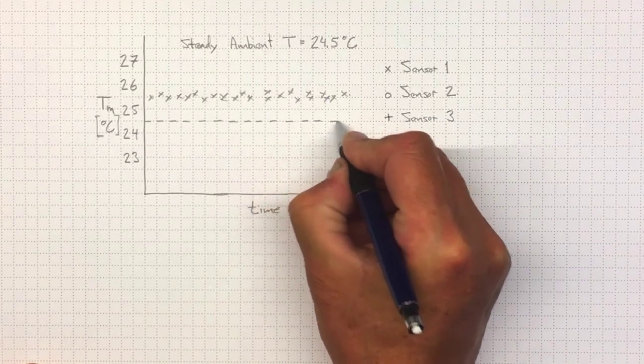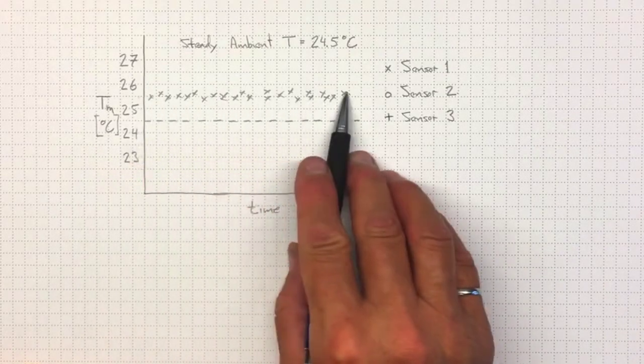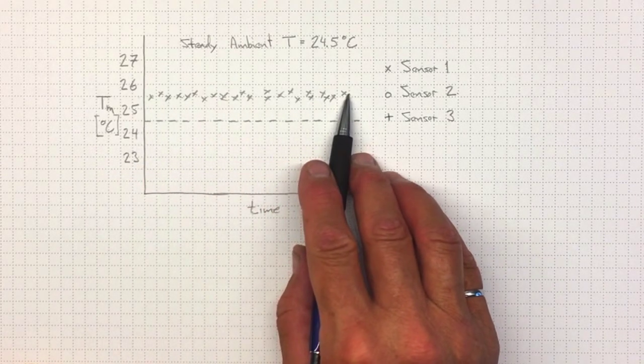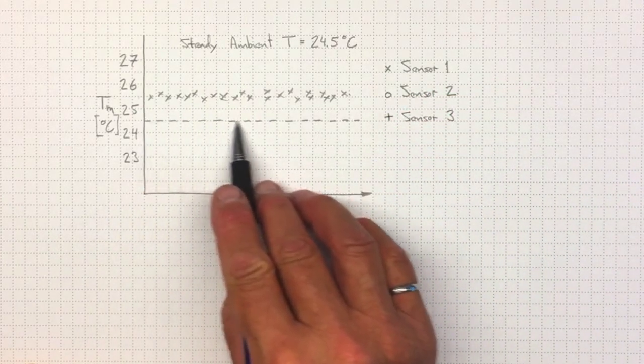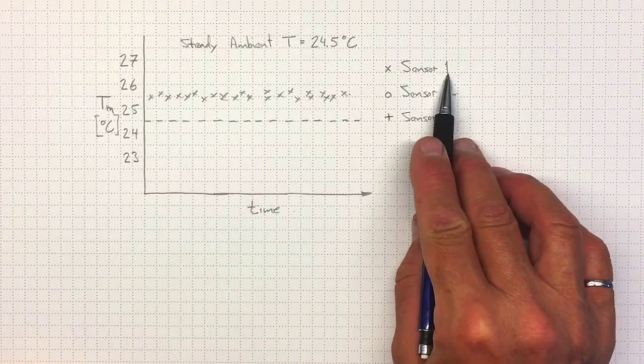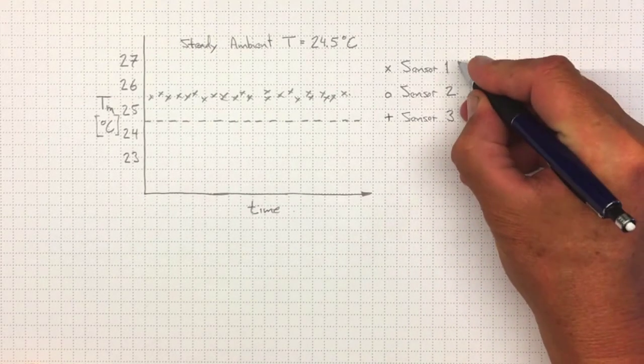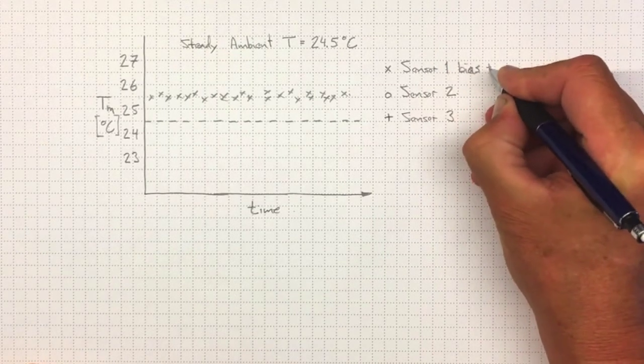Now, if I made this measurement, I could correct that knowing that it's off by one degree. I could take all of the results and reduce them by one degree and wind up sitting pretty close right on that line. That is, if I actually calibrated sensor one and knew that it had a bias of plus one.